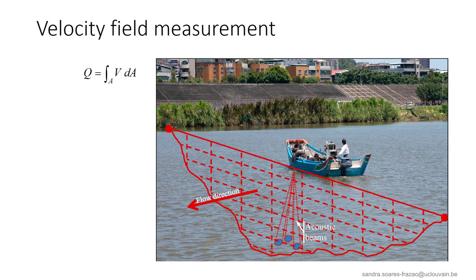As indicated in the equation, the discharge is by definition the integration of the velocity over the cross section. So, to measure the discharge, we need to measure the cross section and the velocity. This can be achieved using different instruments that provide point velocity measurements or measurements over a vertical or a horizontal line. Then, these discrete measurements are integrated over the cross section to obtain the discharge.